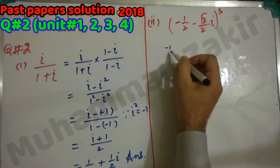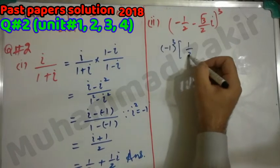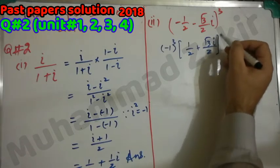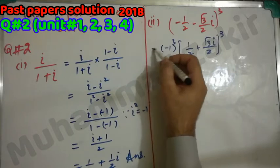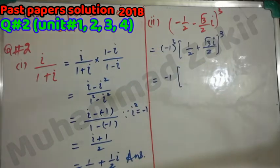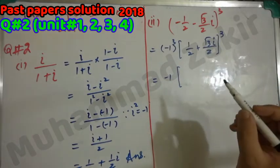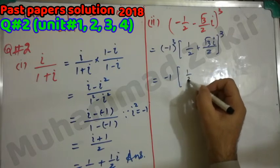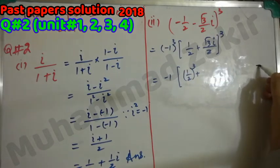Taking minus 1 common makes both terms positive: (1/2 + √3/2·i)³. This is now (a + b)³ form. Minus 1 cubed is minus 1, which stays outside, and we expand a³ + b³ + 3a²b + 3ab² inside.